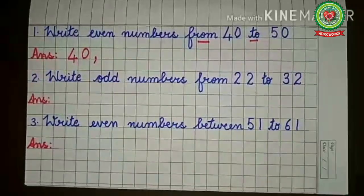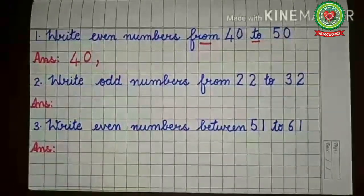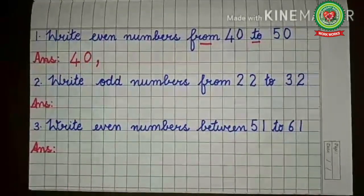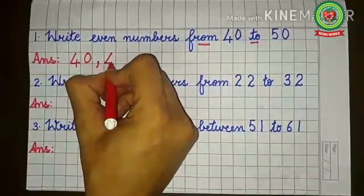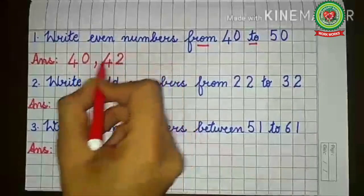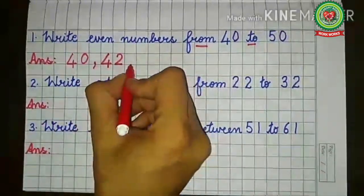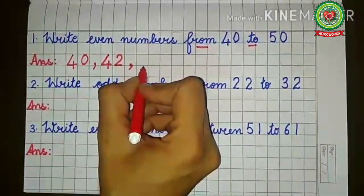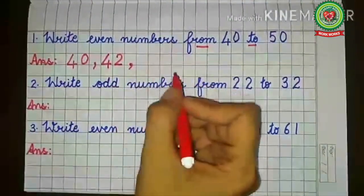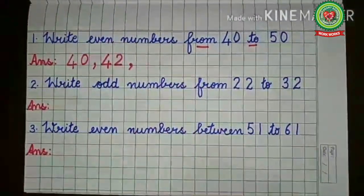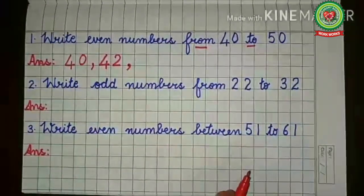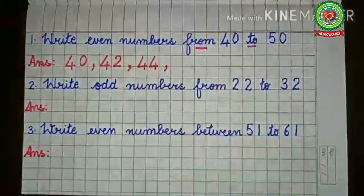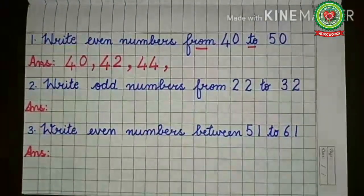Forty-one ends with one, so it is an odd number — we skip it. Forty-two ends with two, so it is an even number. Forty-three would be odd, so we skip it. Forty-four ends with four, which comes in the table of two, so forty-four is an even number. Forty-five ends with five, so it is an odd number.